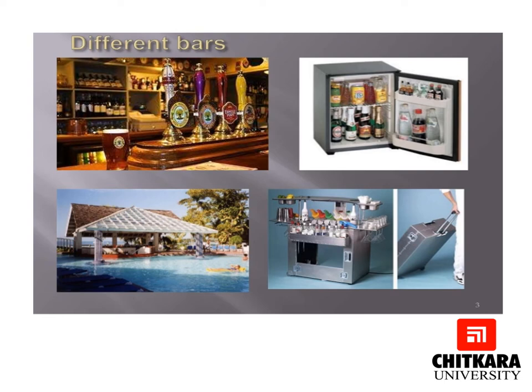In the third photograph we see a pool bar. This is a bar located on the pool side, so a person relaxing or swimming can raise his hand to the bartender, order a drink, and it would be served to him. This concept is typically found in resort properties. In the last photograph we have a mobile bar, which is very handy as it can be transported from one place to another, and the bartender can move his drinks as per requirement.